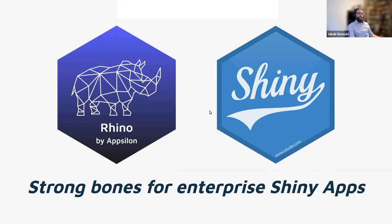Welcome everyone. My name is Jakub Nowicki. I'm a senior software engineer at Epsilon, a company focused on providing solutions for various companies based mostly on Shiny. We also do some other software engineering related to R, but our main topic is Shiny.